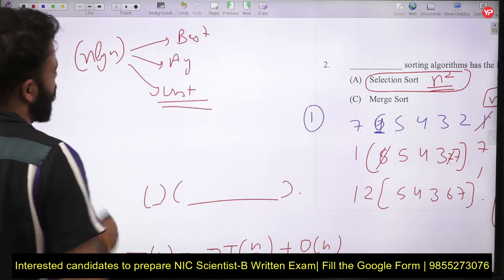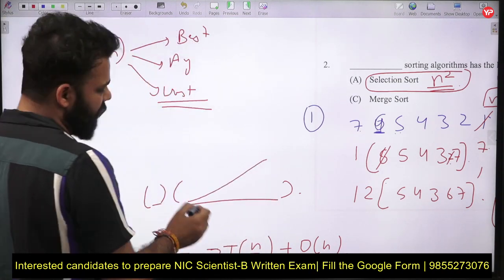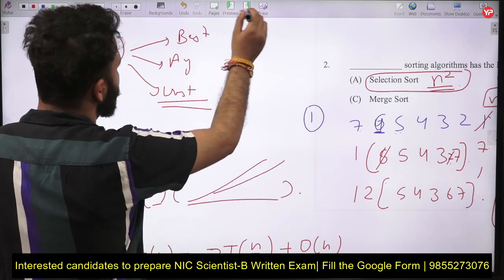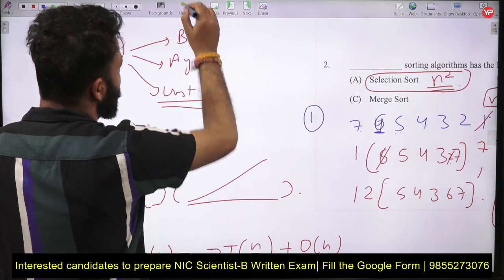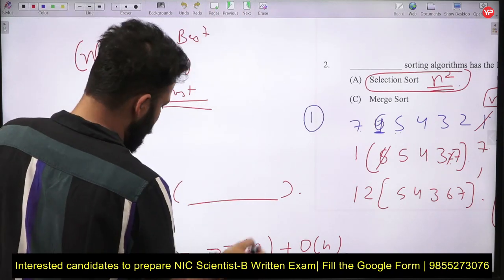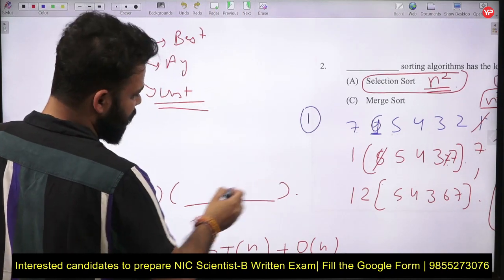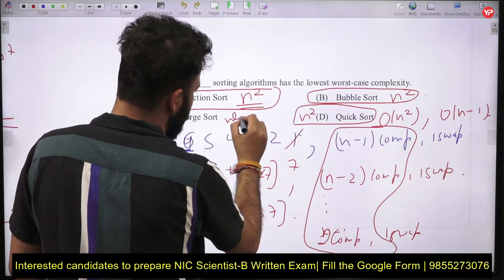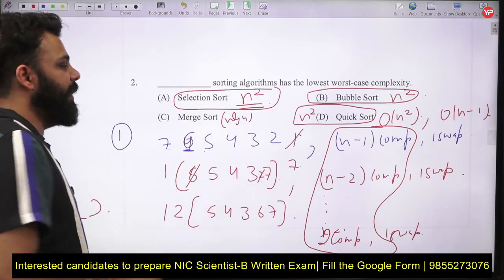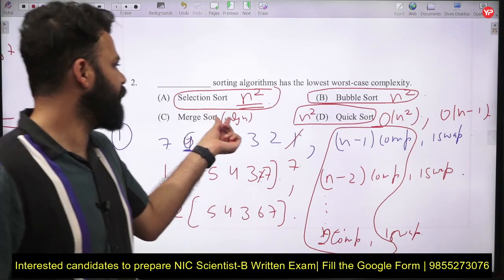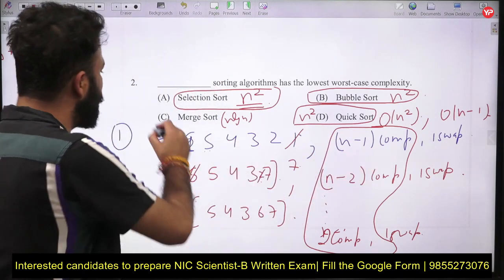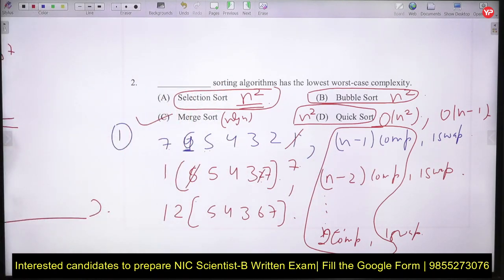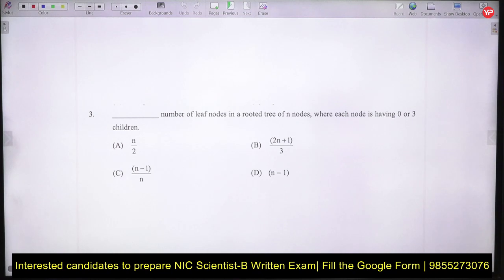For merge sort, the complexity is O(n log n) in every case — best case, average case, and worst case. So when comparing the worst cases of all algorithms, the lowest worst-case complexity is for merge sort. The correct option is option C.